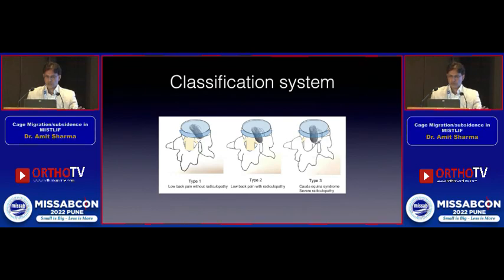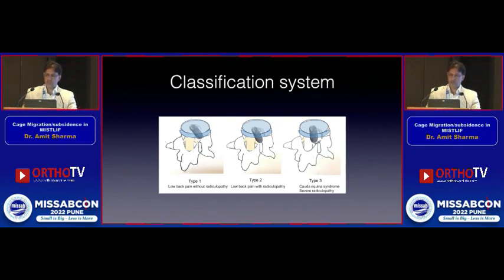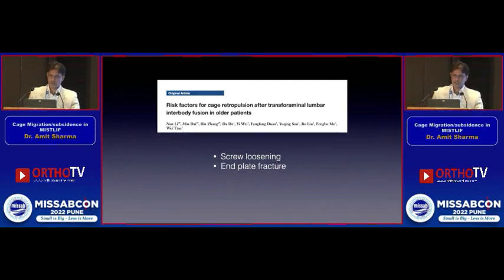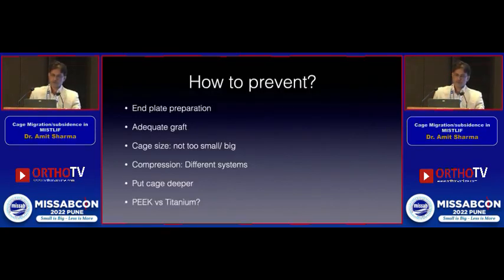Additional risk factors: younger age, male sex, L5-S1 level, less surgeon experience, and spondylolisthesis cases. A classification system exists based on whether the patient has radiculopathy, back pain only, or the grade of radiculopathy. In older patients, screw loosening combined with endplate fractures further increases the chances of cage back-out.